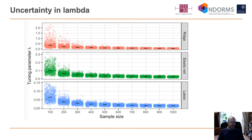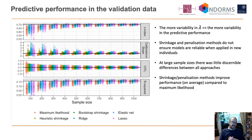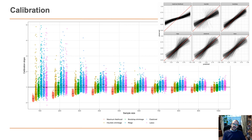Similarly to the estimation of the shrinkage factor, where we saw considerable uncertainty in their estimation, we now see considerable uncertainty in the estimation of the tuning parameter for the penalised regression approaches too, particularly when the sample size is small. That variability in estimating shrinkage or tuning parameters leads to substantial variability in our performance estimates for small sample sizes. As sample size increases, the variability in the tuning parameters and shrinkage factors decreases, as does the variability in our subsequent predictive accuracy measures.